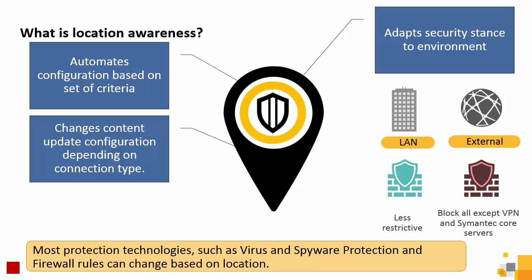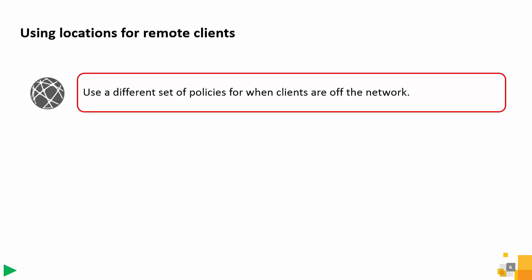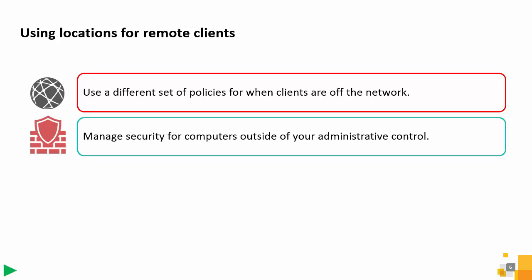To learn more about the Location Awareness feature, see the Customizing Policies Based on Location lesson and the Enforcing Adaptive Security Posture module in the SEP 14 Configure and Protect course. Location Awareness enables you to use a different set of policies when clients are off the network — for example, a hardened firewall policy or live update policy that retrieves updates directly from Symantec. You can also manage security for computers outside of your administrative control.